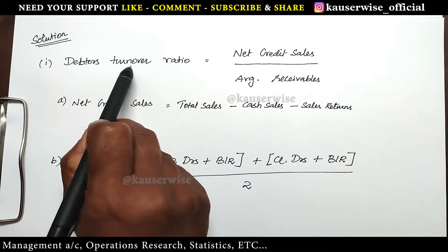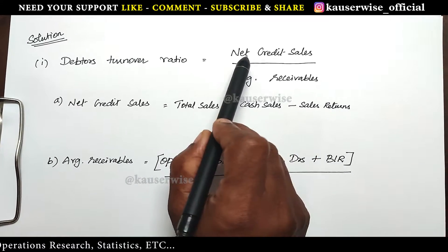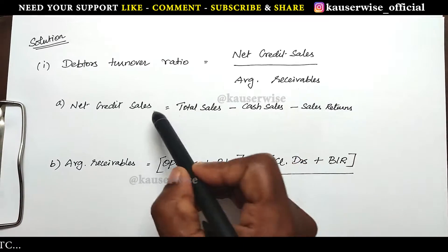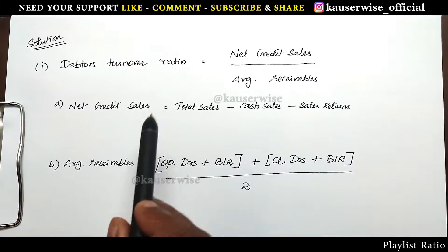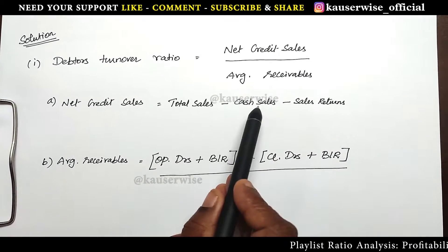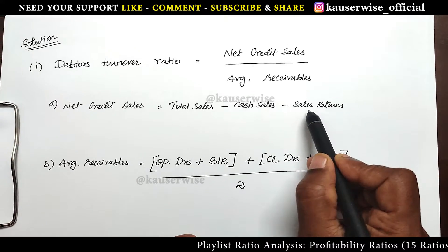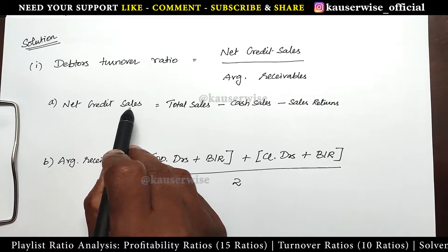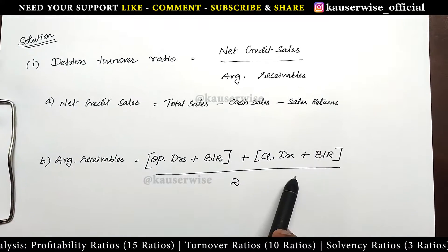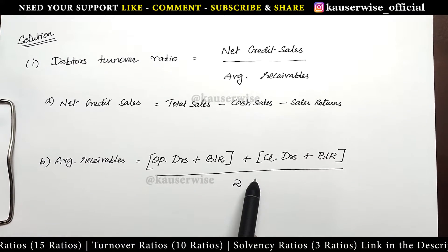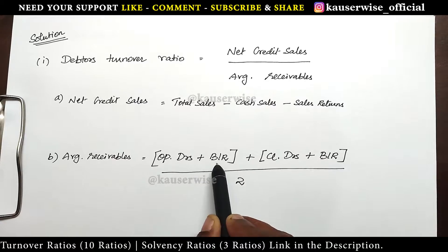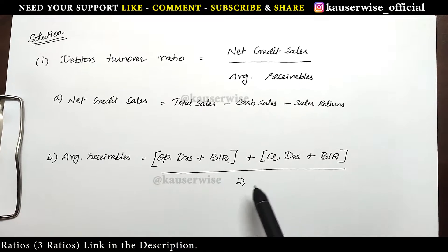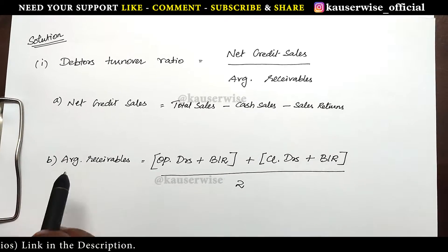First we are going to find out the debtors turnover ratio. The formula is: net credit sales divided by average accounts receivable. The formula to find net credit sales is: total sales minus cash sales minus sales return — that gives you net credit sales. For average receivables, the formula is: opening balance of debtors and bills receivable plus closing balance of debtors and bills receivable, added together and divided by 2.